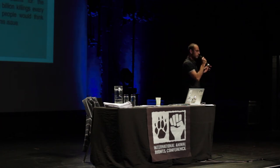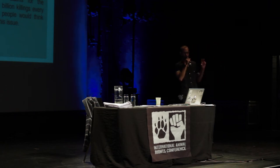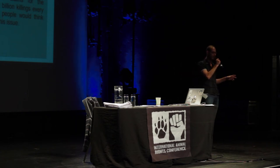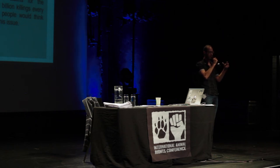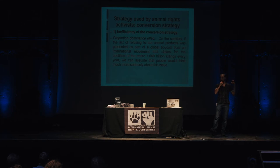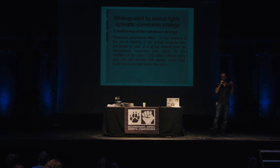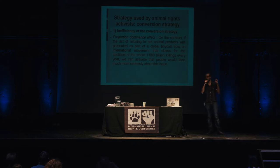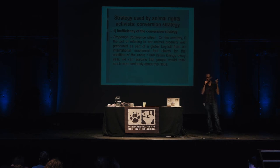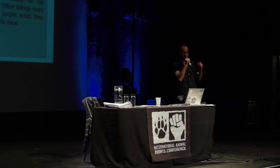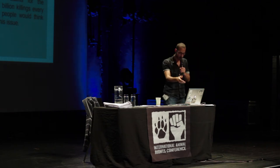On the contrary, if we frame it differently — if we say that refusing to eat animal products is part of a global boycott that aims to eradicate all animal exploitation, because there is a whole movement making a claim for the abolition of animal exploitation — then for people it will be much more interesting to think about. They will think: 'It's not just my personal action saving 100 animals per year, it is a global movement that can abolish the whole 1,060 billion animals killed each year.' Because of the proportion dominance effect, they will think much more seriously about this second framing.